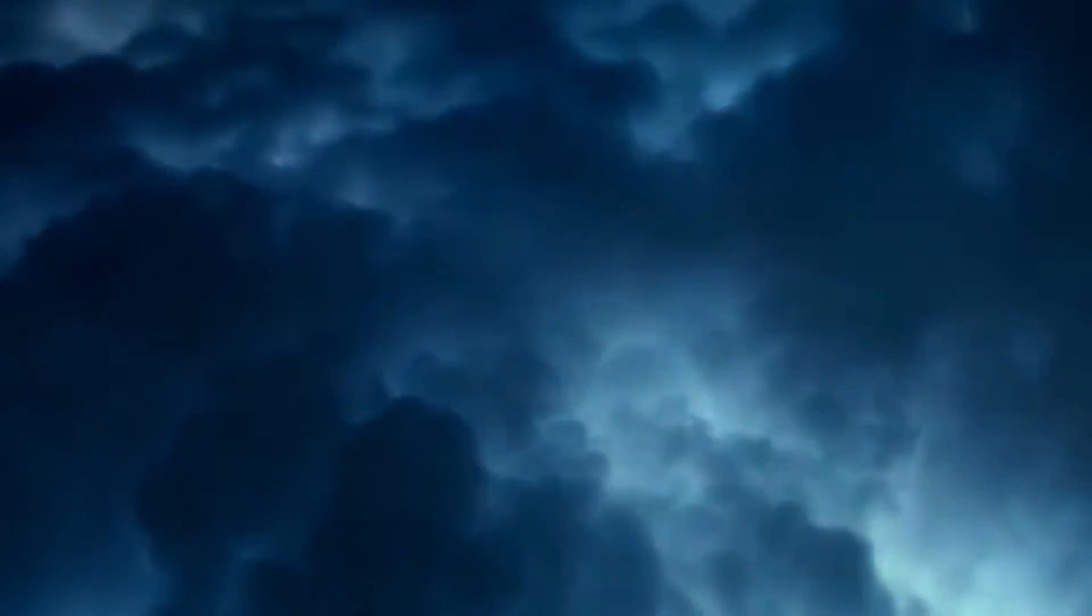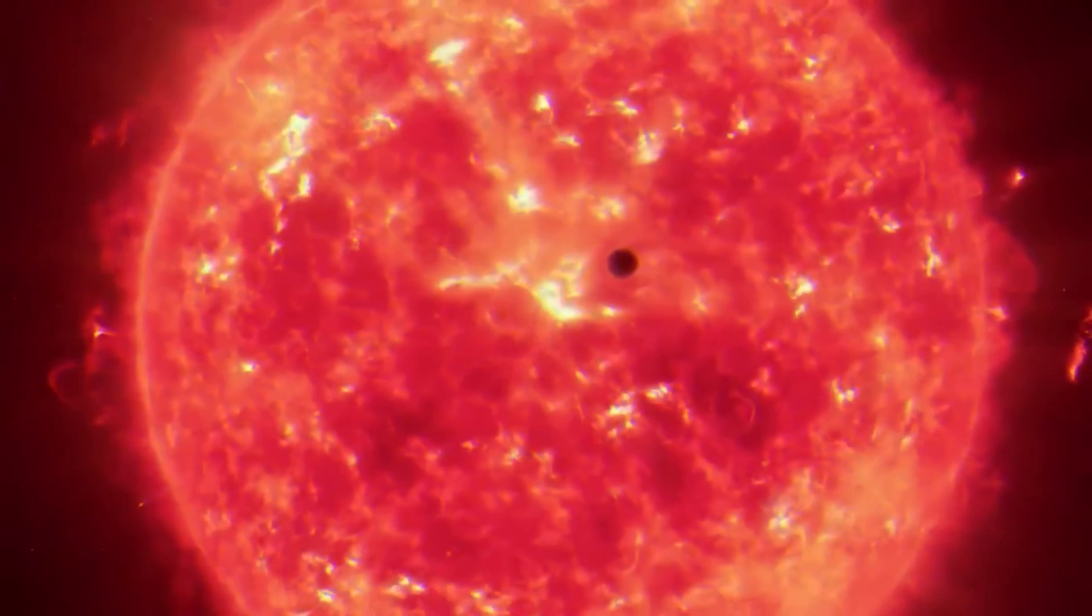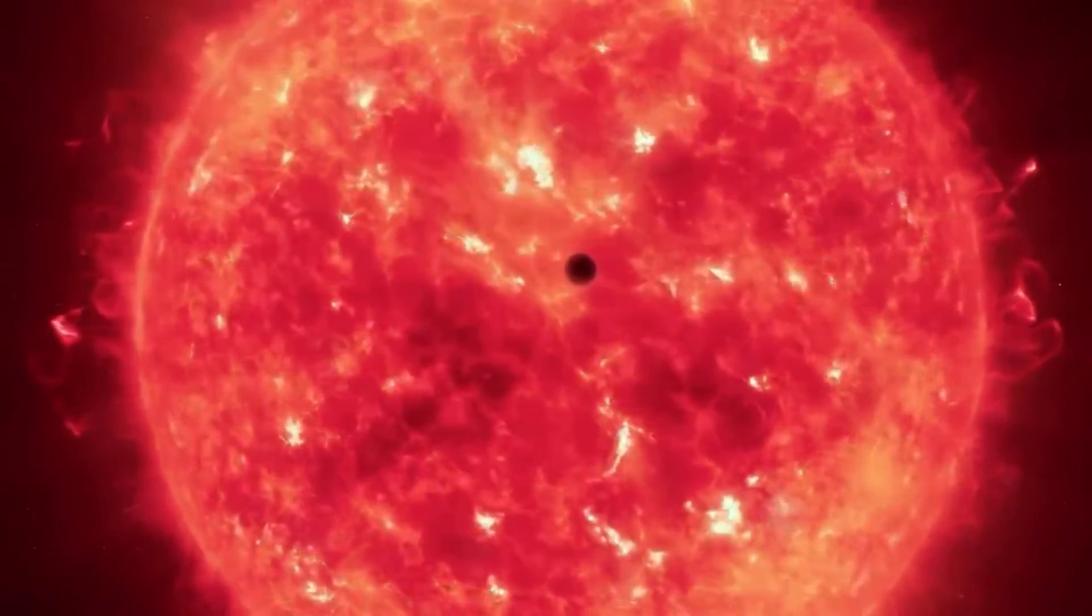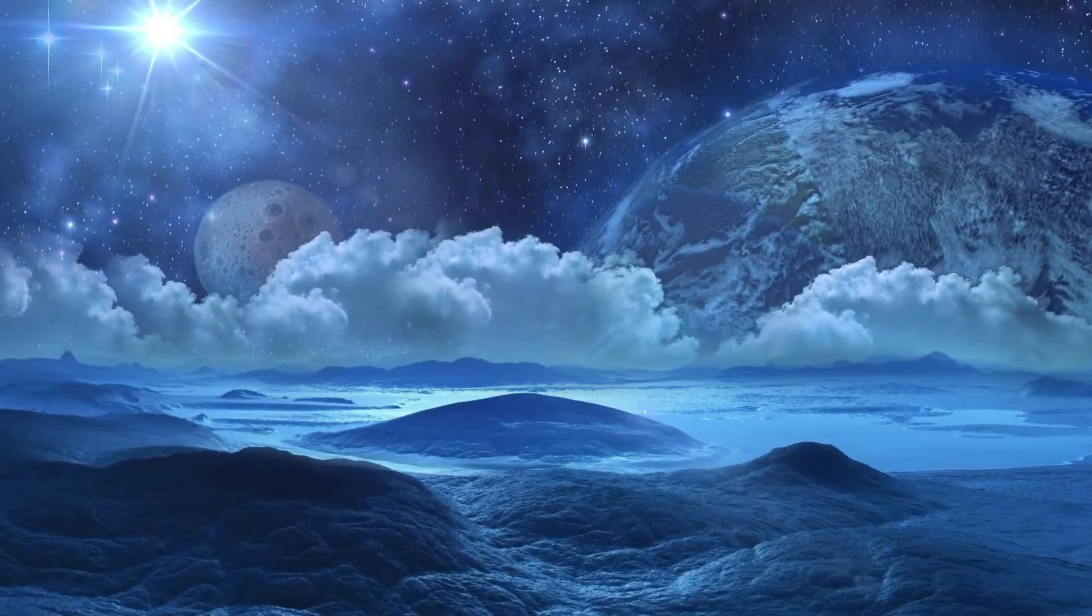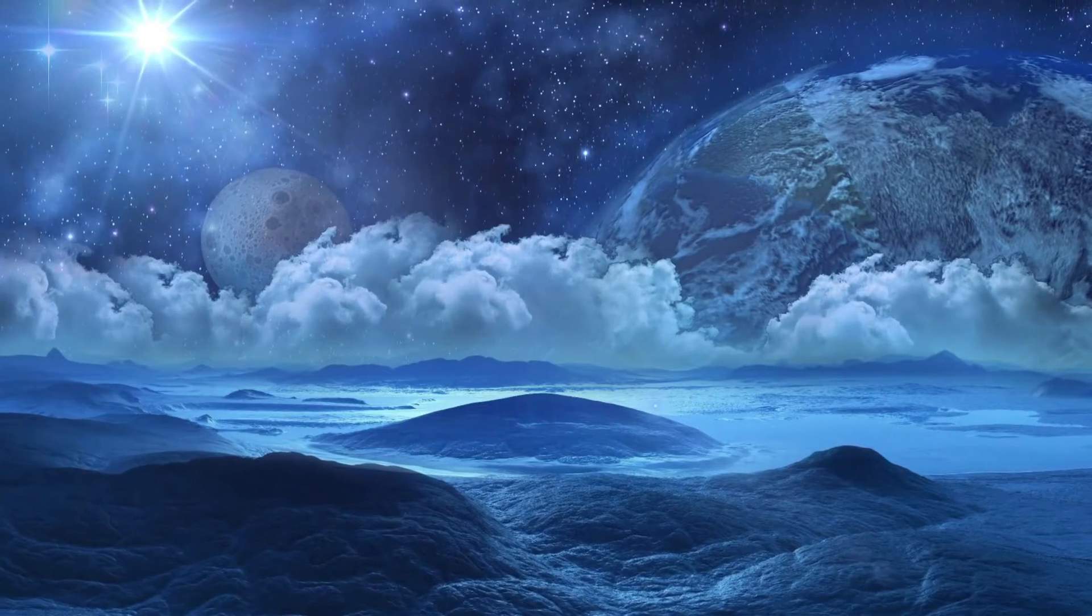But it's possible that Proxima Centauri b had an atmosphere of hydrogen from the start, or that it formed further away from its star, which would make it hard for water to escape. So, the water on Proxima Centauri b may have lasted longer than its early history.